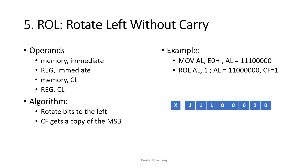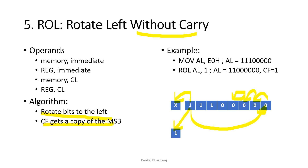Next is ROL — rotate left without carry. Every single bit is shifted one bit to the left, and CF gets a copy of the MSB. Since carry is not part of the rotation, the MSB becomes the LSB. For AL = E0, the MSB 1 goes to CF and becomes the new LSB, giving us 1,1,0,0,0,0,0,1.